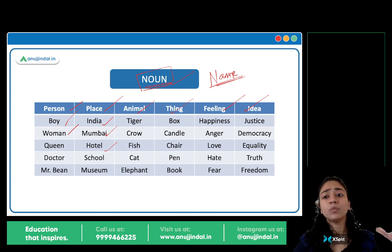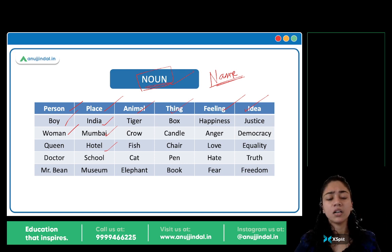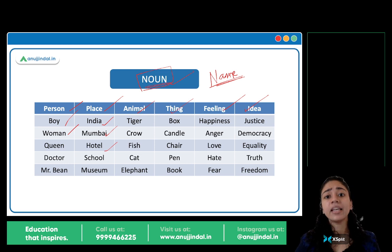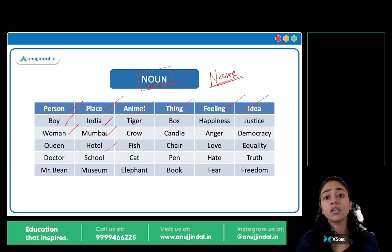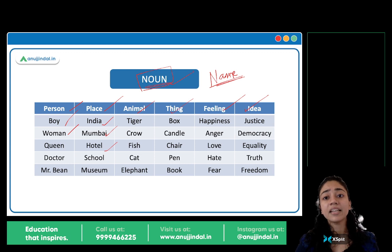Animal: birds, fish, crow, tiger, lion, elephant, butterfly, cat, dog — sare nouns hai. Thing: box, pen, chair, candle, table, bottle — sare nouns hai. Feelings: happiness, anger, sadness, love, hate, fear — sare feelings hai. Naam hai, toh noun hai.